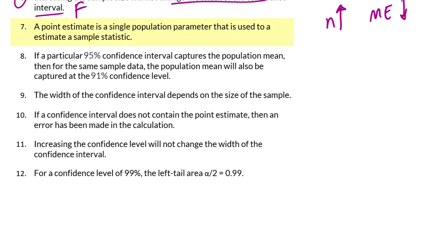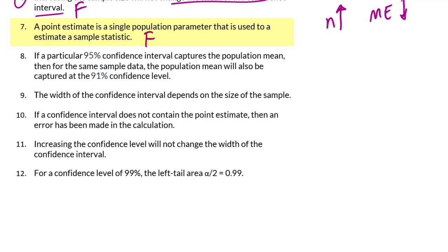Number 7: A point estimate is a single population parameter that is used to estimate a sample statistic. That is a false statement as well. A point estimate is a sample statistic that is used to estimate the population parameter. We just need to switch the position of those two terms and the statement will be true.